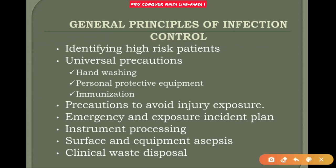The general principles of infection control: the first and most important step is identifying high-risk patients. Then take universal precautions including hand washing, personal protective equipment, and immunization. Precautions should also be taken to avoid injury and exposure. You need to know the emergency and exposure incidental plan, instrument processing, equipment asepsis, and clinical waste disposal.